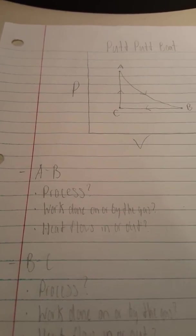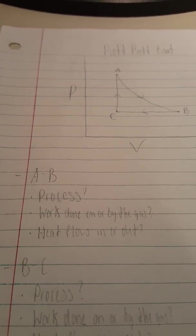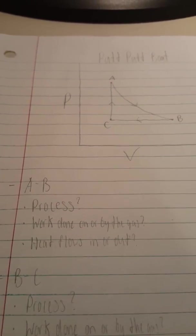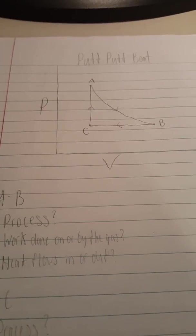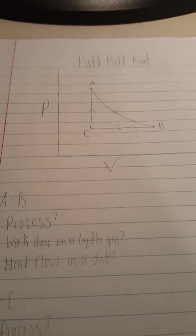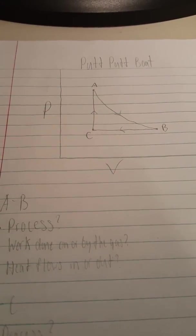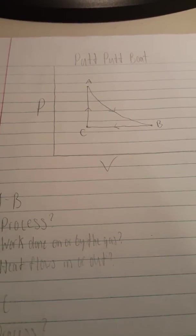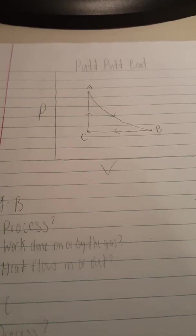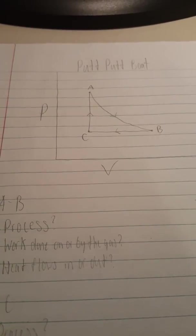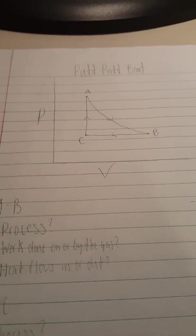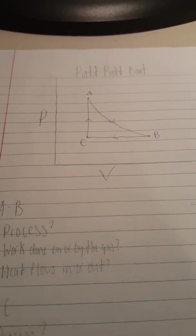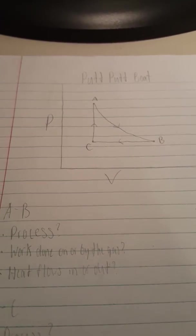Does heat flow in or out? Heat has to flow in because the molecules have to move slower, so heat needs to flow in in order to keep temperature constant. That's what we know with A to B.